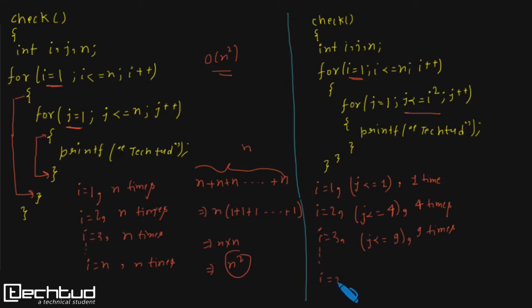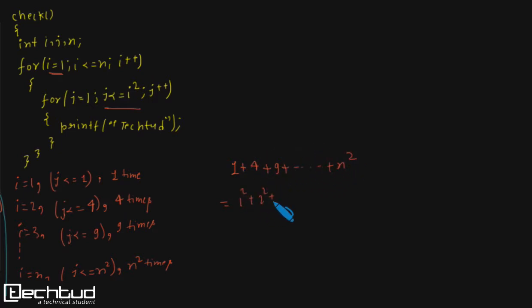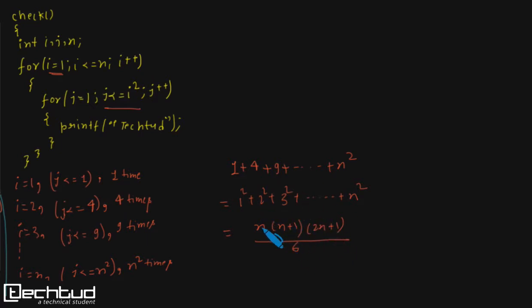Continuing this pattern, for i equals to n, this will execute a total of n² times. So the total execution count is 1 plus 4 plus 9 plus dot dot dot plus n², which is the sum of squares of natural numbers: 1² + 2² + 3² + ... + n² = n(n+1)(2n+1) / 6. You must know this basic formula. If you solve this, the highest power of n you get is n³, so the complexity of this program is O(n³).